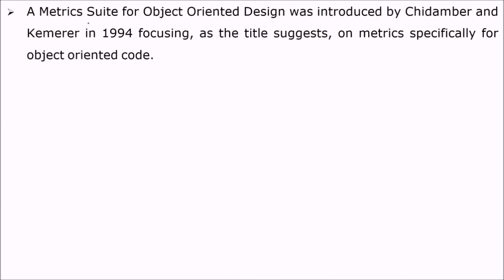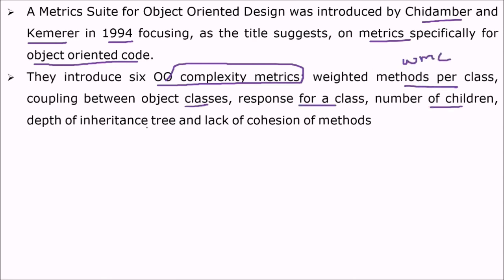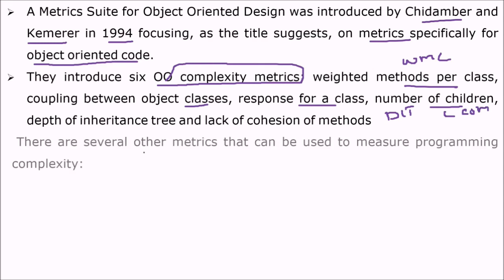A metric suite for object-oriented design was introduced by Chidamber and Kemerer in 1994, focusing on metrics specifically for object-oriented code. They introduced six object-oriented complexity metrics: Weighted Methods per Class (WMC), Coupling Between Object classes (CBO), Response For a Class (RFC), Number of Children (NOC), Depth of Inheritance Tree (DIT), and Lack of Cohesion of Methods (LCOM).